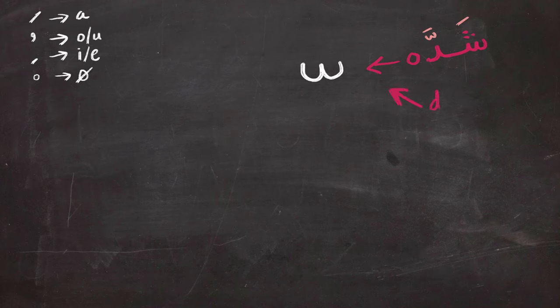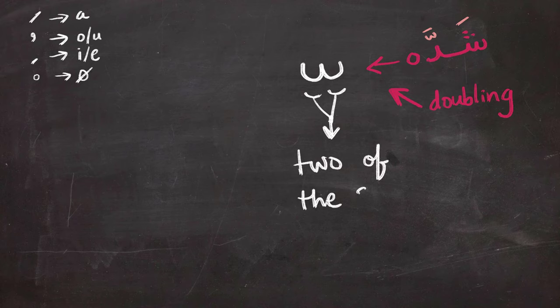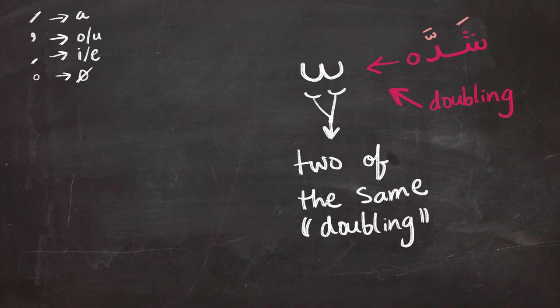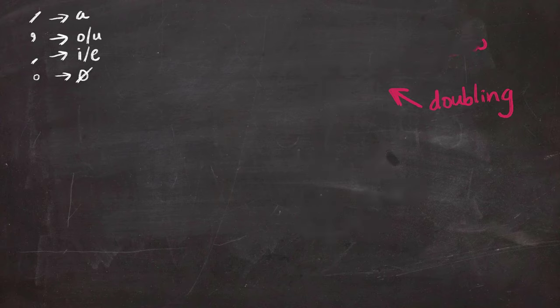So doubling of a letter. And from the way this symbol looks, it looks so much like the W and it has two folds that are exactly the same, which indicates that it is two of the same sound, two of the same letter. That's why it's called doubling.